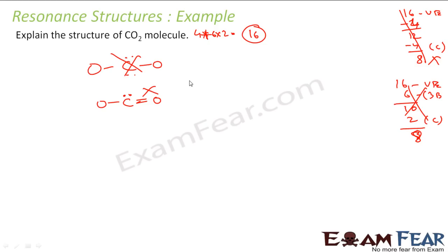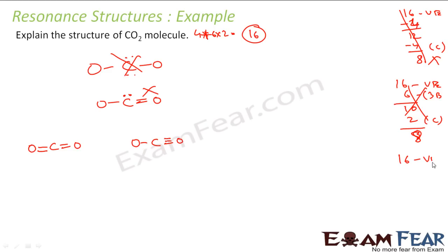Now we can draw a new structure because we have to draw one more bond here. One option is I can add an extra bond on one side; the other case is I can draw an extra bond on the other side. So we have two possible options — let's take both options and start fresh again.